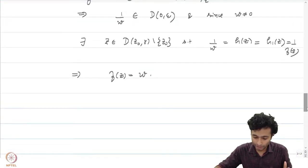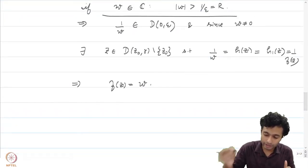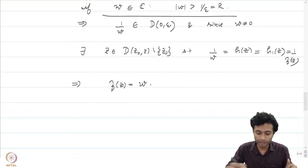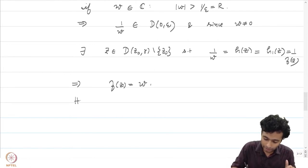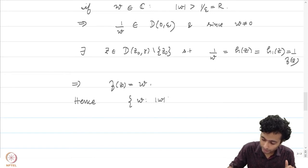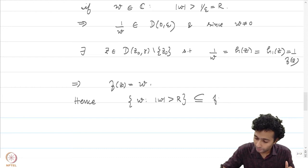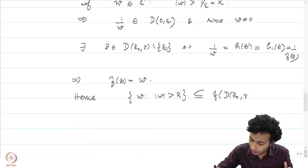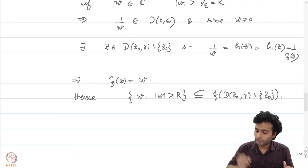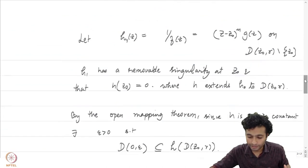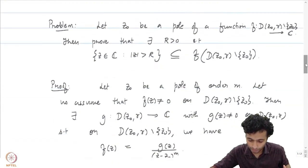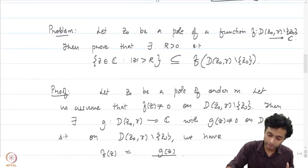So, take any arbitrary point w in ℂ satisfying |w| > R. Hence the set of all w such that |w| > R is contained in f(D(z₀, r) minus {z₀}). And that is precisely what we had set out to prove.